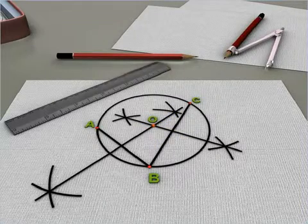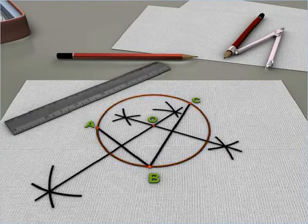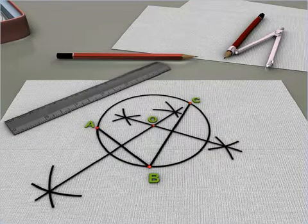As the center of the circle is unique, so there can be only one circle that passes through the given non-collinear points.